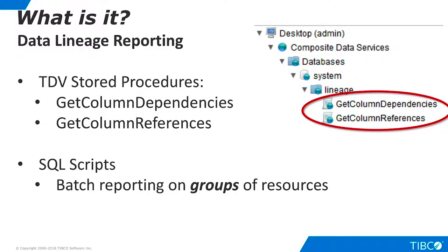TDV ships with two stored procedures that form the basis of its data lineage reporting capability. GetColumnDependencies provides a column-by-column report of the upstream data lineage of a TDV resource. GetColumnReferences provides a similar report of downstream data lineage. These procedures are great for reporting on any individual resource.